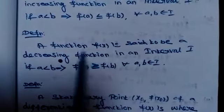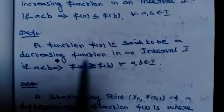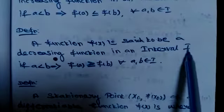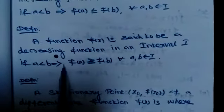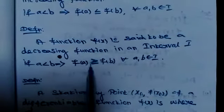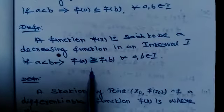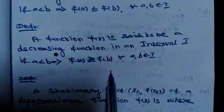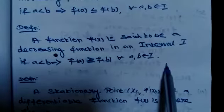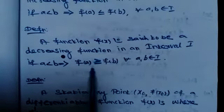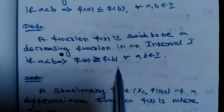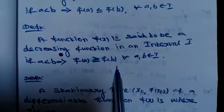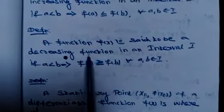Next: decreasing function. A function f(x) is said to be a decreasing function in an interval I if a less than b implies f(a) greater than or equal to f(b), for every a, b belonging to I. So the condition for a decreasing function is f(a) greater than or equal to f(b).